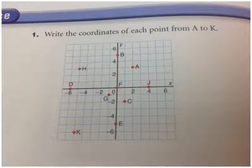We have to find point A, point B, point C, point D, point E, point F, point G, point H, point J, and point K. There was no point I.